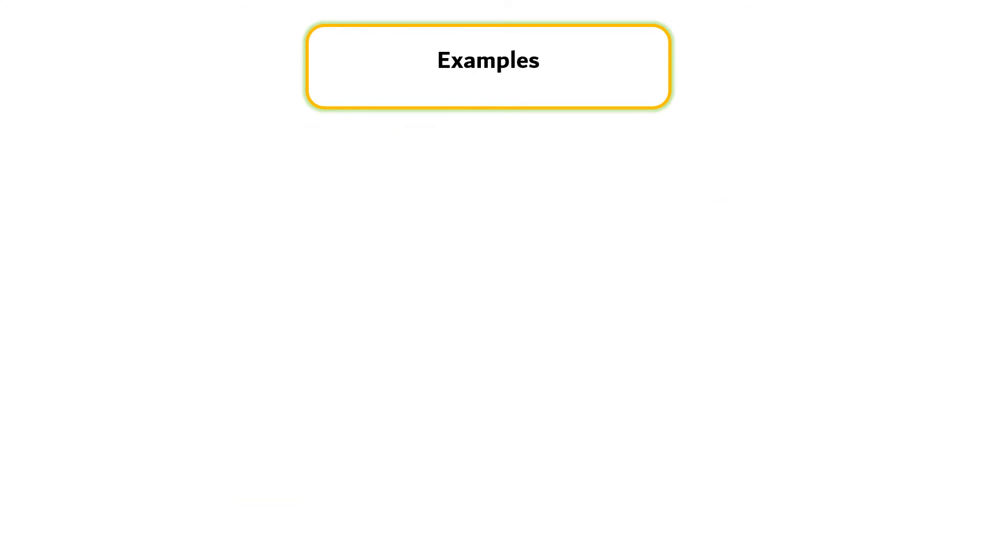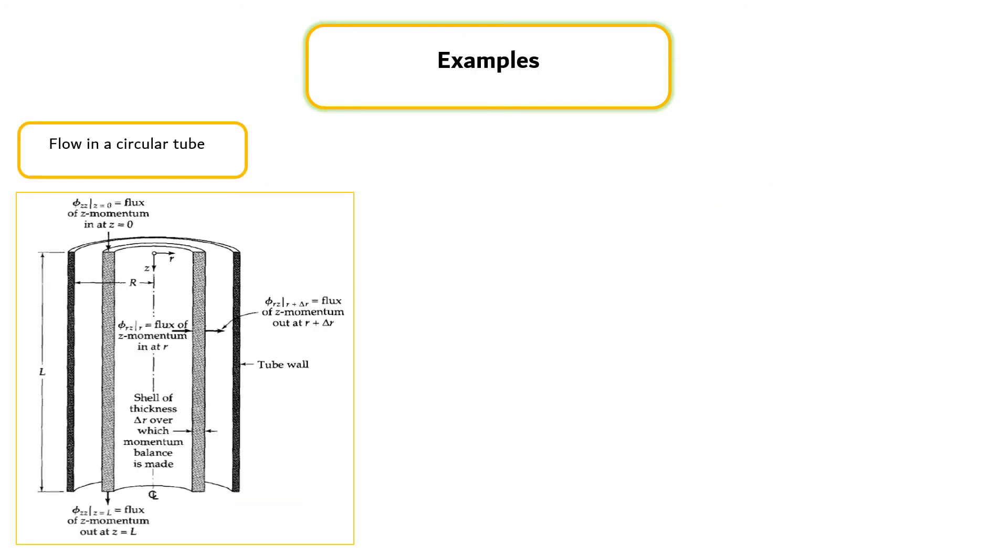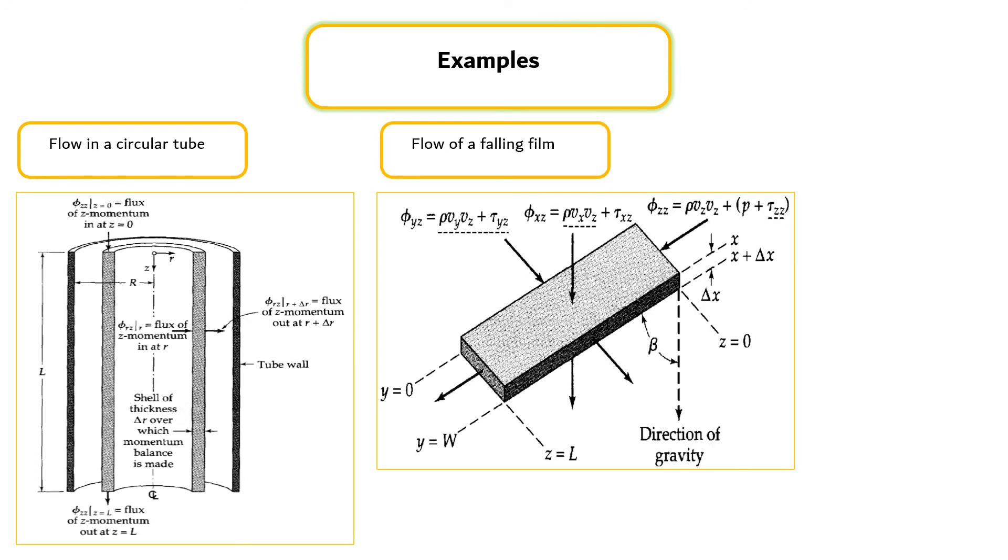We will discuss two examples: flow through a circular tube and flow of a falling film that have been discussed in Module 4 using the approach of shell momentum balance, but now with the use of equations of change.